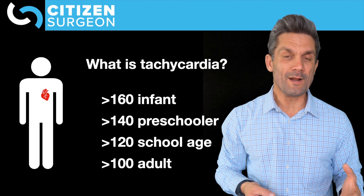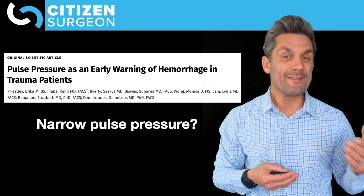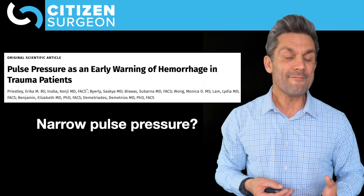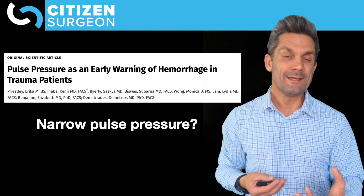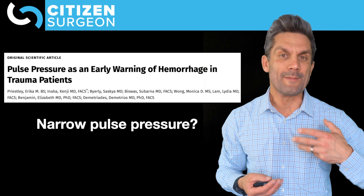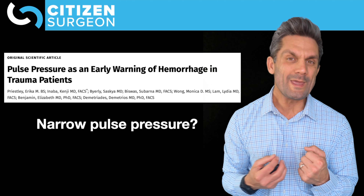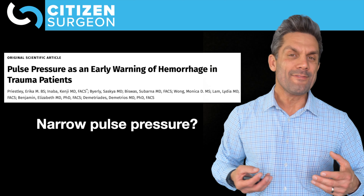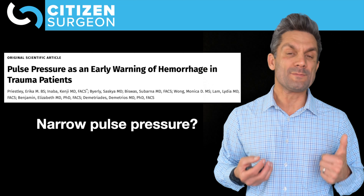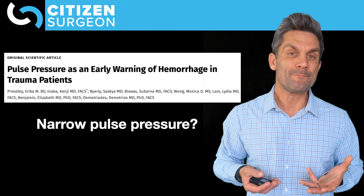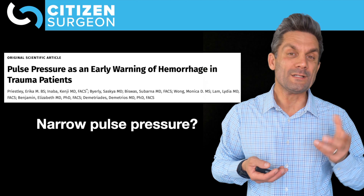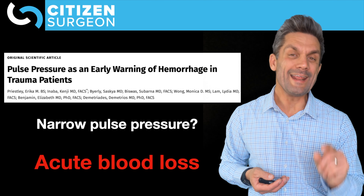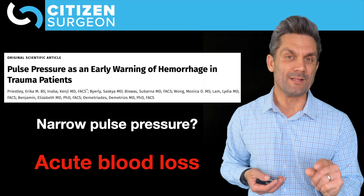Pulse pressure — the difference between systolic and diastolic pressures — is important in shock. When injury causes hypovolemia, epinephrine and norepinephrine squeeze the venous system, raising mean venous pressure. That raises diastolic pressure and narrows pulse pressure. So if you see a narrowed pulse pressure, that is an early indicator that somebody is in hypovolemic shock.